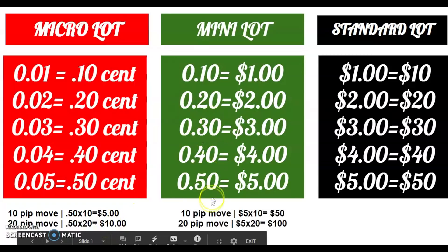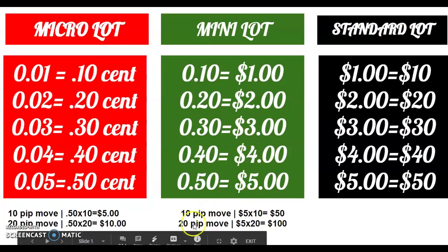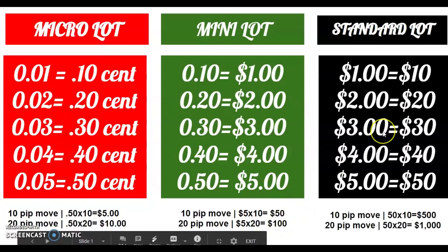Now over here on mini lots, a 10-pip move — let's say you did a 0.50 mini lot, which is $5 per pip. You times that by 10, you get $50. So a 10-pip move over here gets you $50. A 20-pip move — 5 times 20 — gets you $100. Now you mess around on the dark side with standards: 10-pip move, 50 times 10, that's going to get you $500.